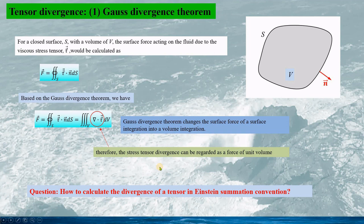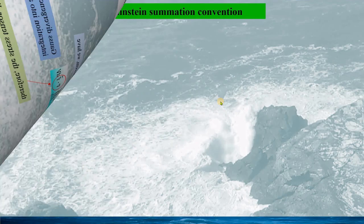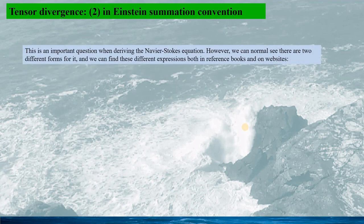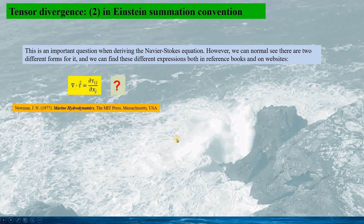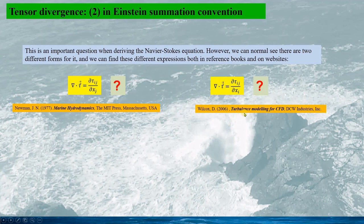Now the question is how we can calculate the divergence of a tensor in Einstein's summation convention. Based on the relevant references, we have two different expressions for the divergence of a tensor in Einstein notation. From the famous book Marine Hydrodynamics, the divergence of the tensor is given by one expression, and from the book Turbulence Modeling for CFD, the divergence of the tensor is given by another. The difference is whether the derivative is taken with respect to xj or xi.